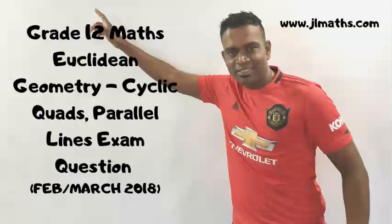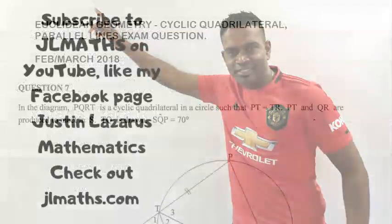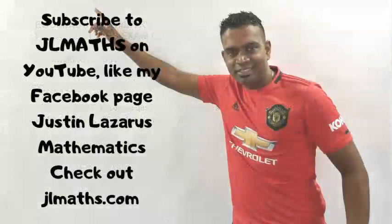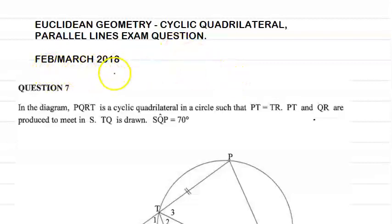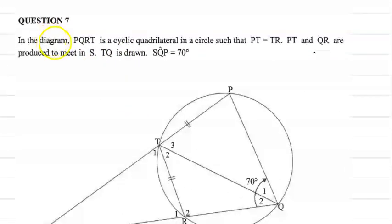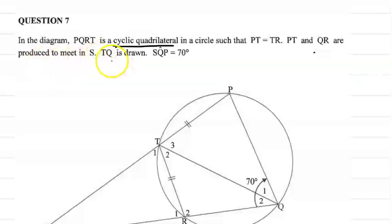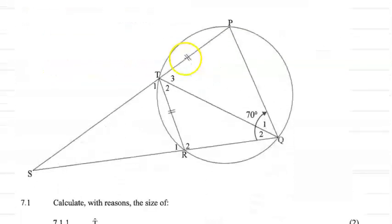Hi guys and welcome to another video. Today's video lesson we're going to be looking at Euclidean geometry, cyclic quadrilaterals, parallel lines, and an exam question. We're going to be looking at the question that came out in the February/March 2018 exam paper. It reads: in the diagram, PQRT is a cyclic quadrilateral in a circle, PT equals TR, and QR are produced to meet in S, TQ is drawn, and angle SQP equals 70 degrees.